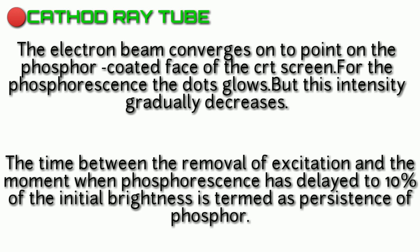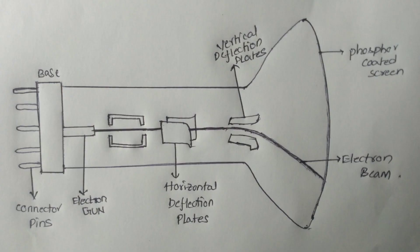The time between the removal of excitation and the moment when the phosphorescence has delayed to 10% of the initial brightness — this phenomenon is called the persistence of phosphorescence.